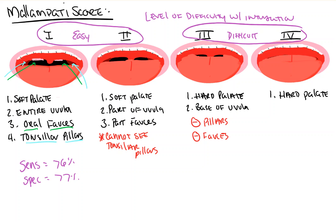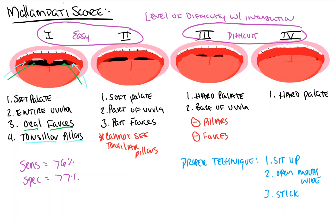Something that should also be done clinically is proper technique for evaluation. The patient should: one, sit up — they should not be laying down; two, open their mouth as wide as possible; and three, stick their tongue out as far as possible. At this point you can ask the patient to say 'ah' — to phonate or not — and the score may change based on the degree to which the patient has protruded their tongue.